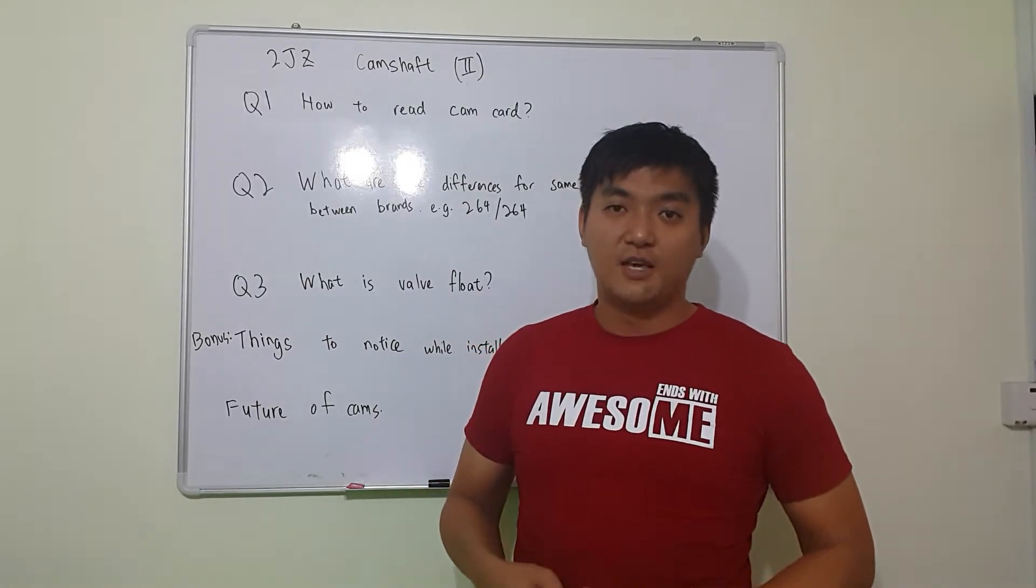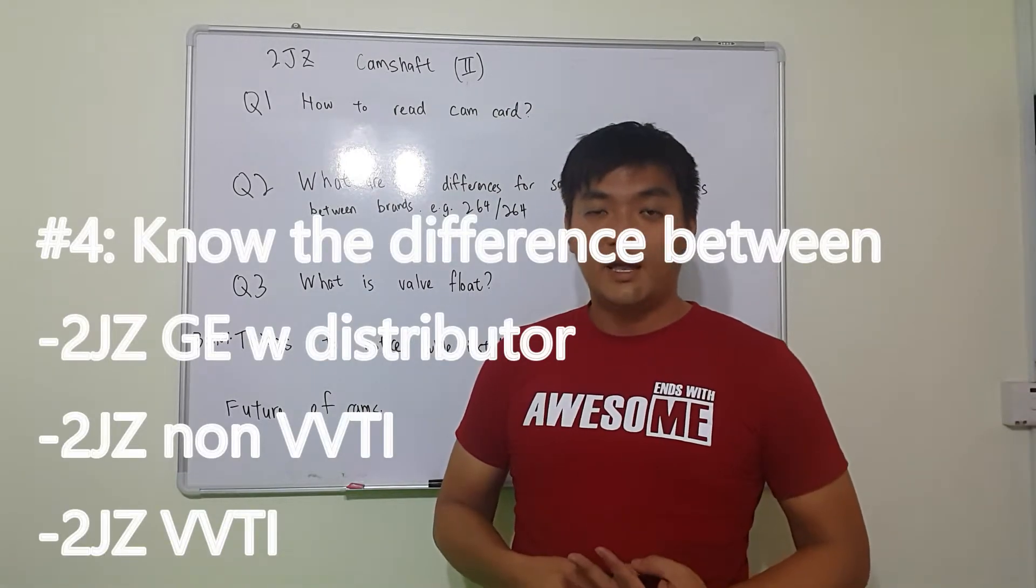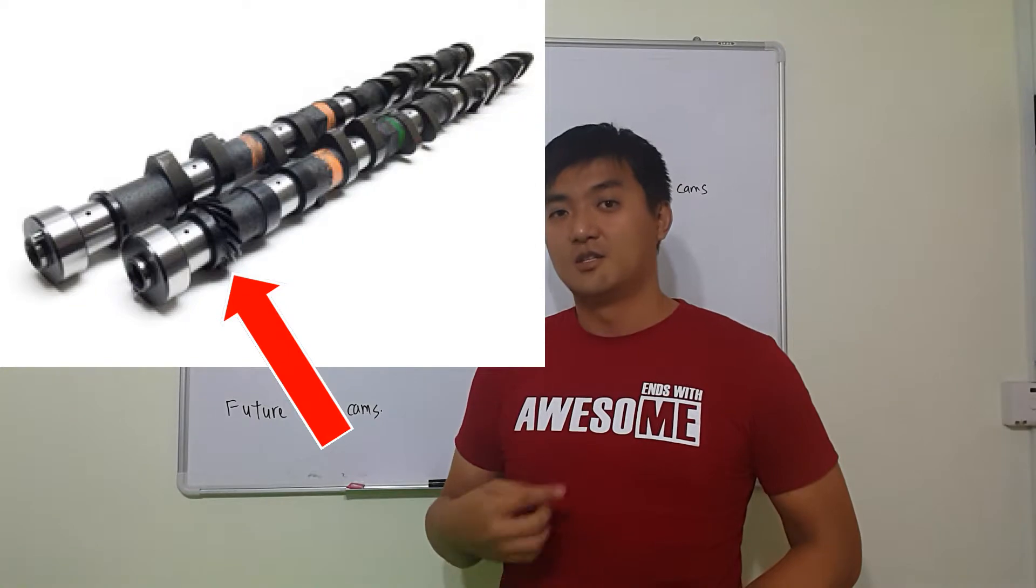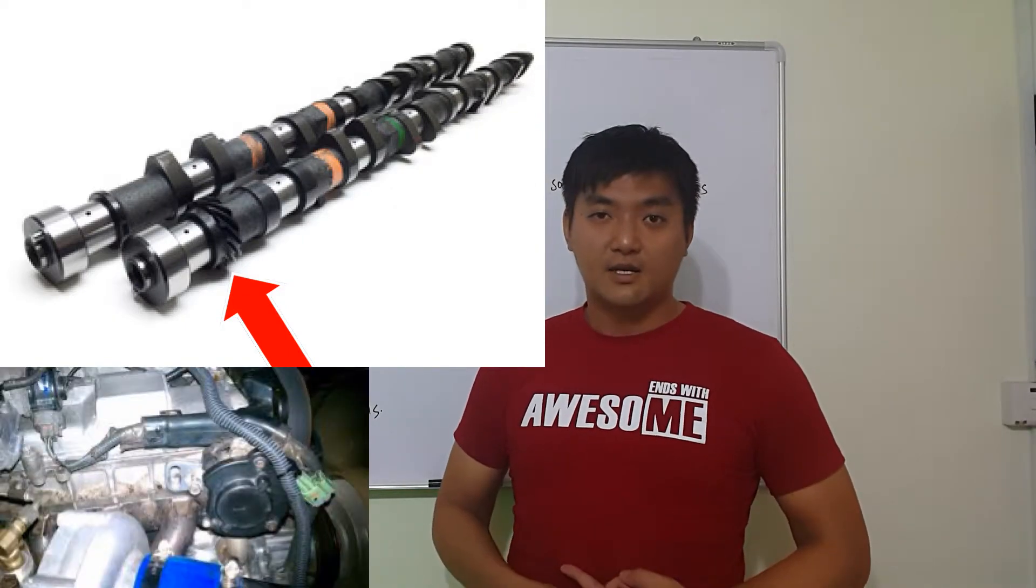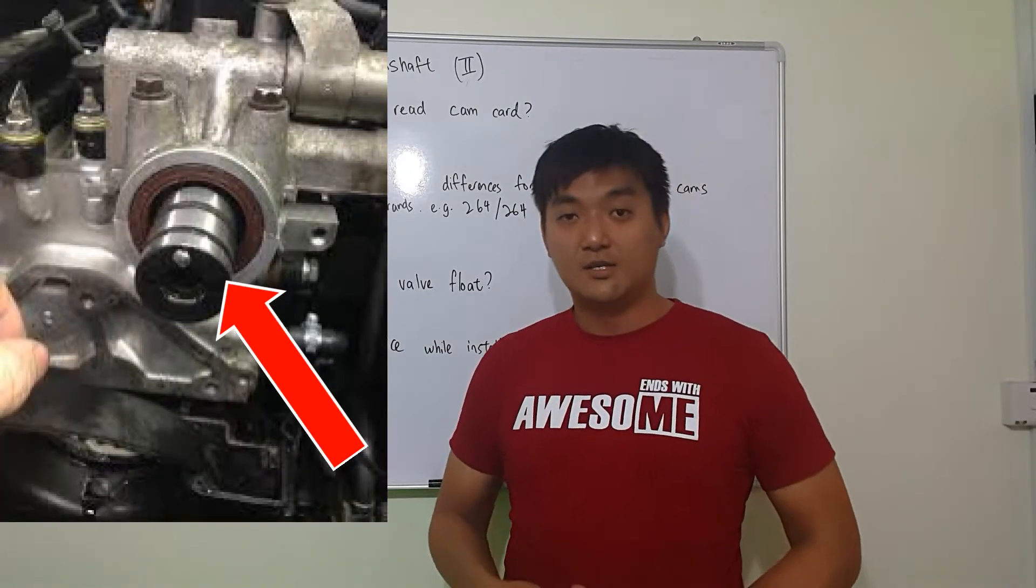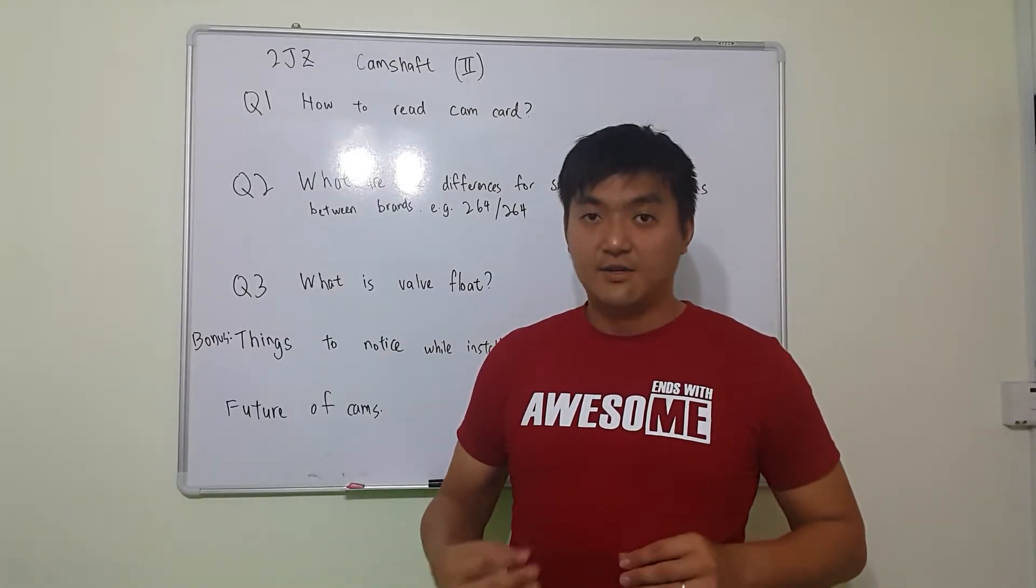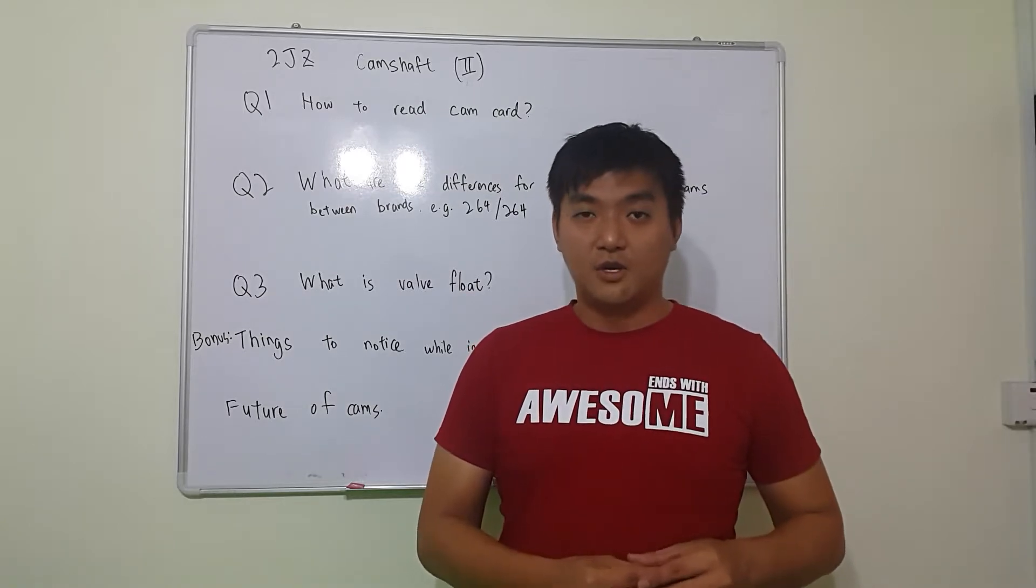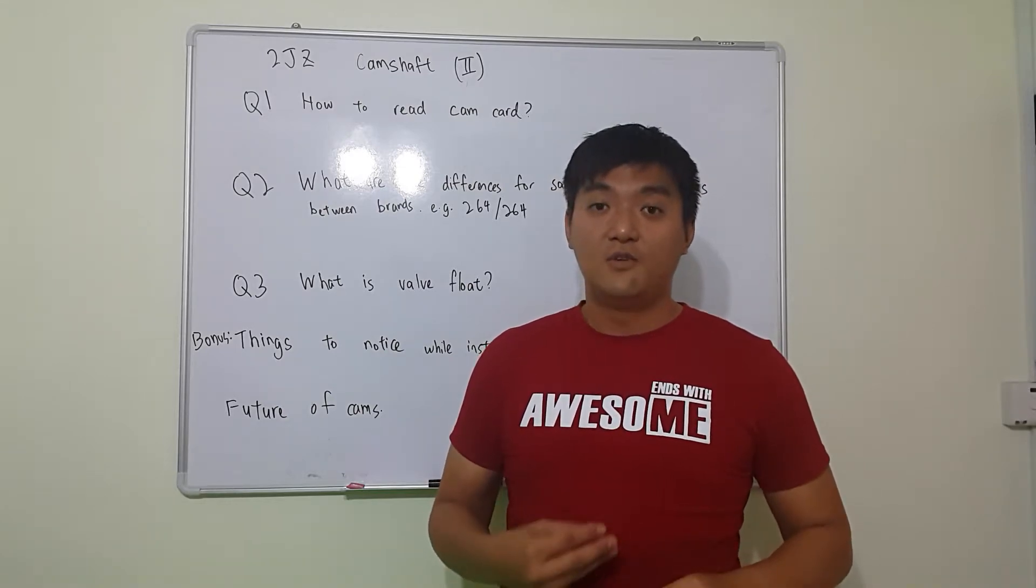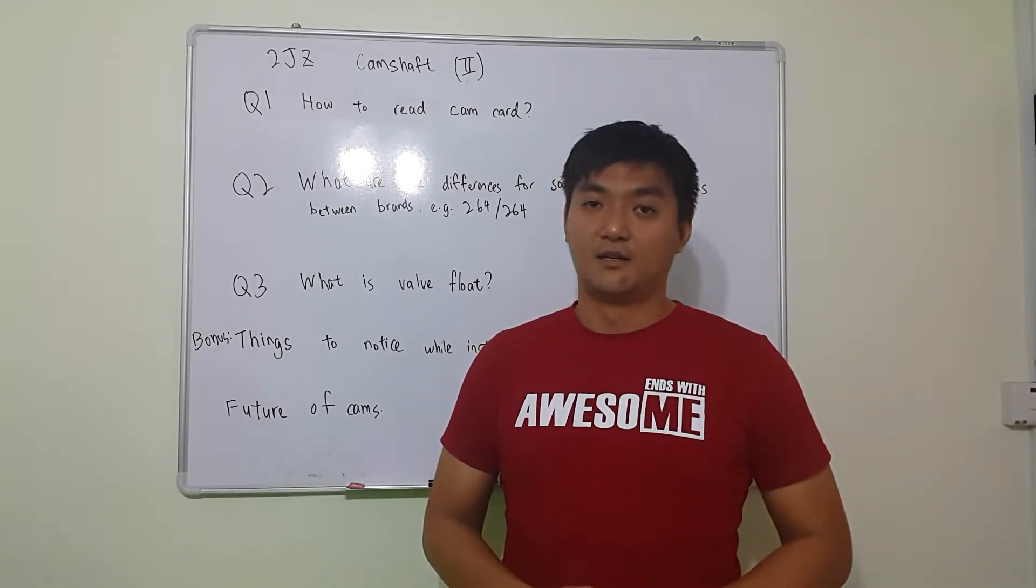The fourth one is specifically for 2JZ. 2JZ has three types. The first one is 2JZ NA or 2JZ GE with distributor. That means it has the distributor teeth for it. The second one is 2JZ non-VVTI. The third one is 2JZ VVTI. So this tool is very different in terms of the intake place. There is a slot for VVTI. So if you are using VVTI head, you have to machine the 2JZ non-VVTI cam so that it can fit into the 2JZ VVTI head.